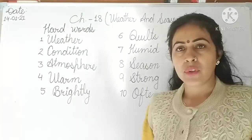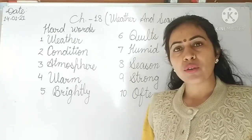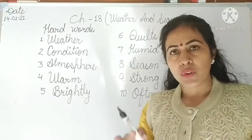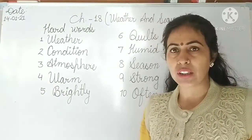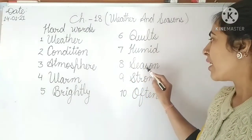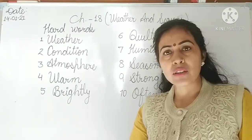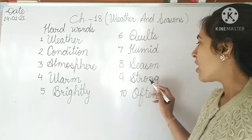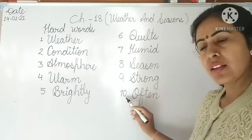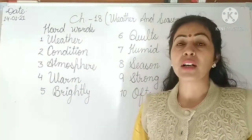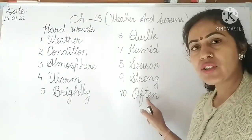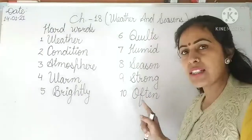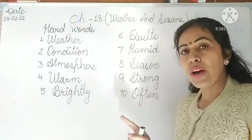H-U-M-I-D — humid means damp or steamy. Season — S-E-A-S-O-N — season means 'ritu' in Hindi. Number nine: strong means powerful. And last, 'often' — O-F-T-E-N — often means frequently. Note: the T in 'often' is silent; it is pronounced 'ofen,' not 'often.' The T only appears in spelling but its sound doesn't come. So these are the hard words.